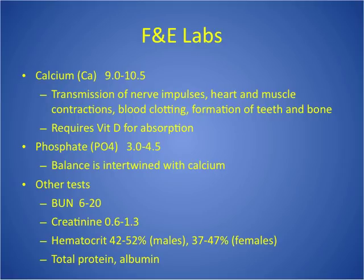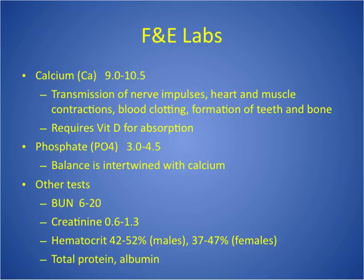Other relevant tests: BUN 6 to 20, creatinine 0.6 to 1.3 — both indicate kidney function. When dehydrated, those numbers may not be completely accurate. Hematocrit is also affected by hydration, with slightly different values for males and females. Total protein and albumin are important because they can pull fluid and cause fluid exchange. A Basic Metabolic Panel (BMP) includes sodium, potassium, CO2, chloride, glucose, calcium, BUN, and creatinine. A Complete Metabolic Panel (CMP) includes everything in the BMP plus albumin, total protein, and liver enzymes: ALP, ALT, AST, and bilirubin.